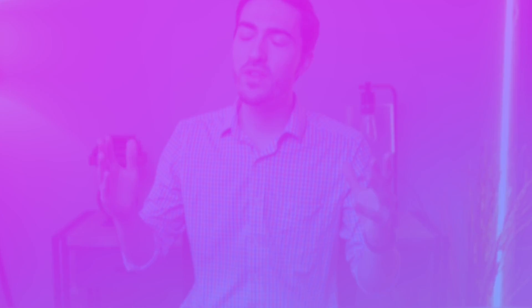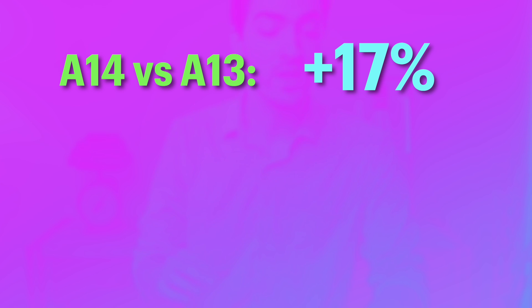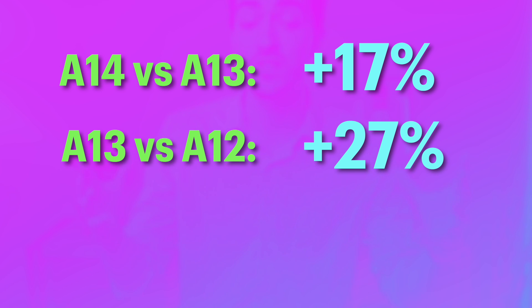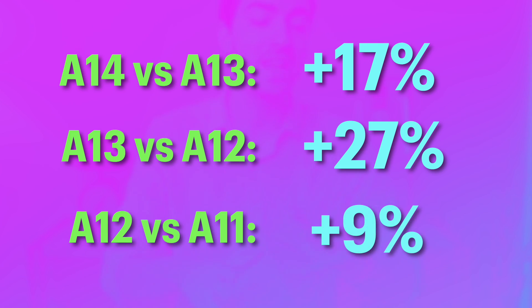These gains are pretty minor — 12% on average isn't something you're going to notice. But it's worth comparing to previous iPhone chips to see if gains this year are greater or smaller. Last year, the A14 versus A13 was about 17 to 20% faster. Before that, the A13 compared to the A12 was 27% faster — pretty substantial. And the A12 versus A11 was 8 to 10% faster.